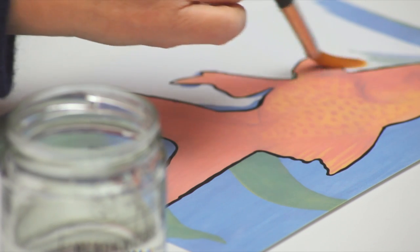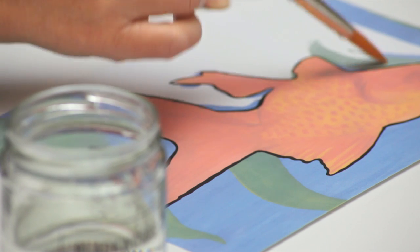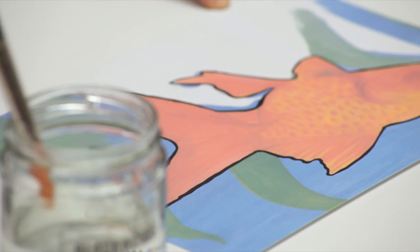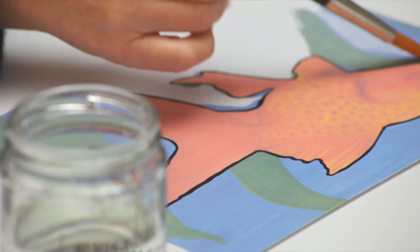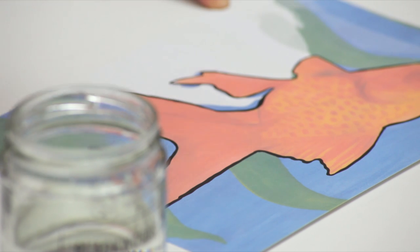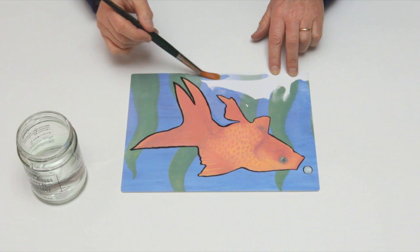The canvas starts off white with a simple clear black outline of the image to help guide the painter. As water is brushed onto the canvas, a beautiful image is revealed, giving the individual that wonderful feeling of painting.